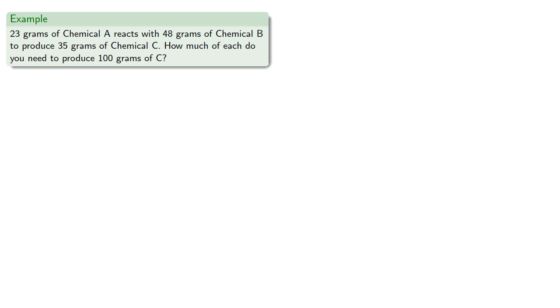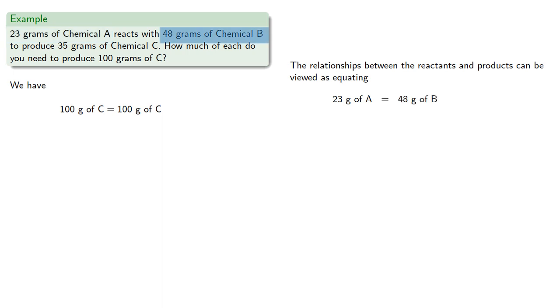Suppose we have 100 g of C. We want 100 g of C, but we'd like to express the amount in terms of A. The relationships between the reactants and the product can be viewed as equating 23 g of A is the same as 48 g of B is the same as 35 g of C.